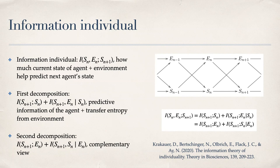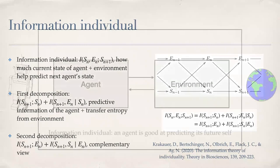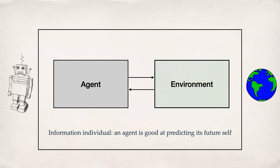Predictive information has been rediscovered by at least five different papers in the last 20–30 years under different names. The other quantity — a transfer entropy — tells us how much the environment can tell us about the system's future that the system's own past cannot. The core idea here is that an agent is a system that is good at predicting itself.